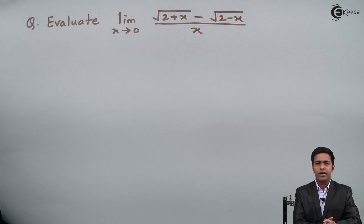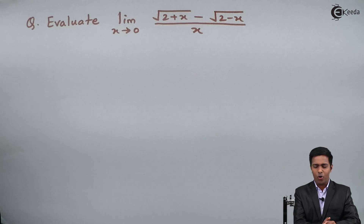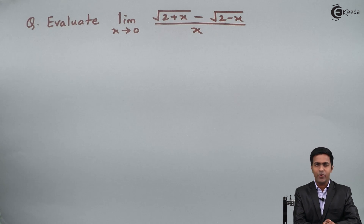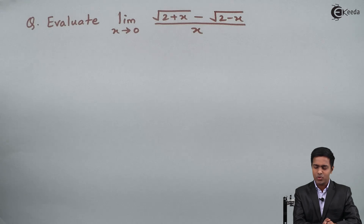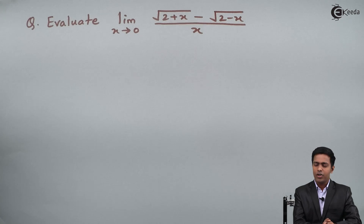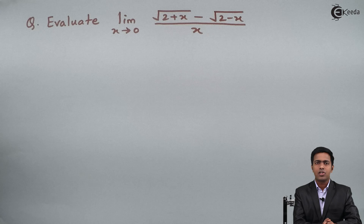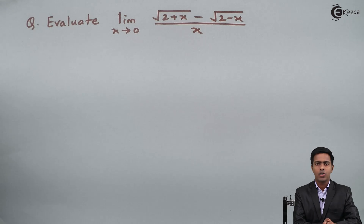Hello everyone. In this problem we have to evaluate the limit as x tends to 0 of the square root of (2 plus x) minus the square root of (2 minus x), all divided by x.